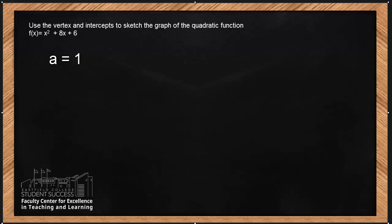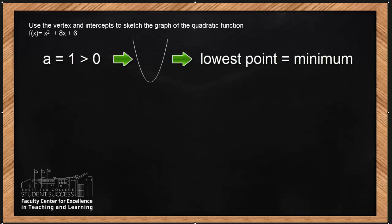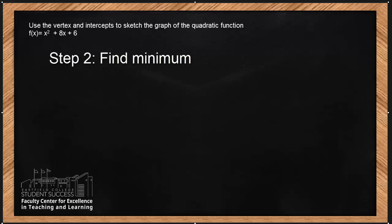Notice it's a positive 1, that means it's greater than 0. And we know if the leading coefficient is positive, our parabola will open up. And if our parabola opens up, our vertex — the lowest point on the graph — will be a minimum. So hence, in step number two, we will find that minimum.